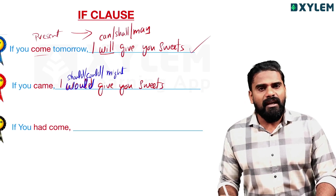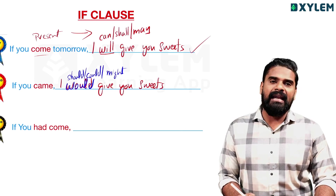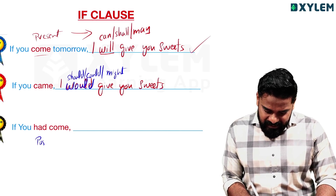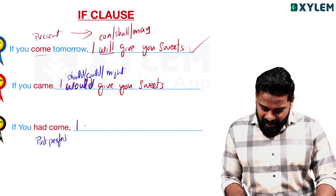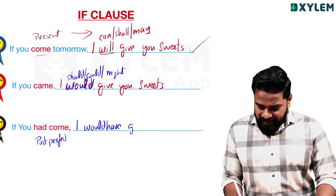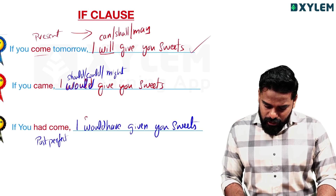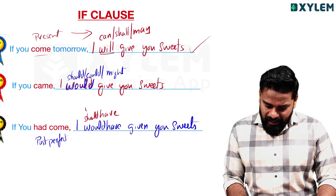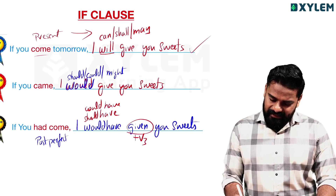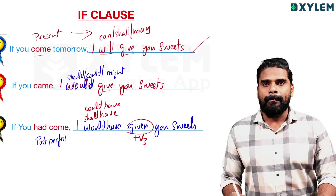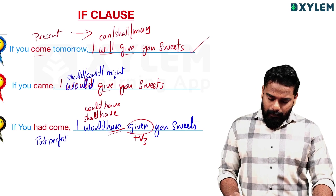Third condition: 'If you had come' — past perfect. The main clause uses would have, should have, could have, or might have, plus V3: 'I would have given you sweets.' So: if clause = past perfect (had + V3); main clause = would/could/should/might + have + V3.